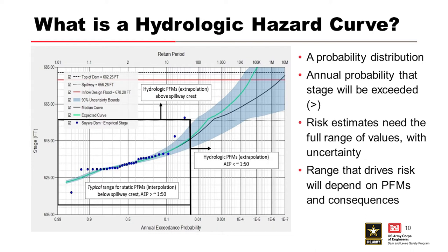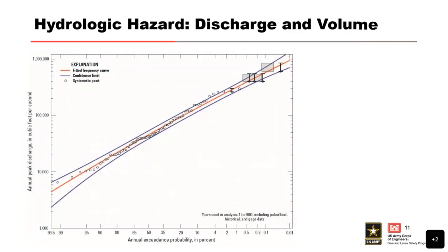For dams, we're often interested in more rare probabilities like 1×10⁻⁴, 1×10⁻⁵, and 1×10⁻⁶ — unless you're in California, where we're probably looking around 1×10⁻⁴. Semi-arid climates do some interesting things.